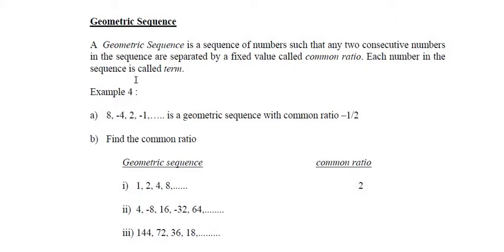Each number in the sequence is called a term. So let's look at the first example: 8, negative 4, 2, negative 1. So 8 is the first term, negative 4 is the second term, 2 is the third term, and negative 1 is the fourth term. This is an example of a geometric sequence with common ratio negative 1 over 2.